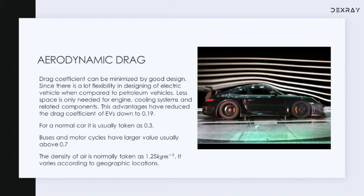Drag coefficient can be minimized by good design. There is a lot of flexibility in designing an electric vehicle compared to a petrol vehicle because less space is needed for the engine, cooling system, and related components. With a good design, the coefficient of drag can be minimized to 0.19 for a car. Normally 0.3 is used in problems and calculations for cars, and buses can have values above 0.7. For electric vehicles, it is possible to minimize the drag coefficient to 0.19 as per current research. For calculations, the normal density of air is taken as 1.25 kg/m³.